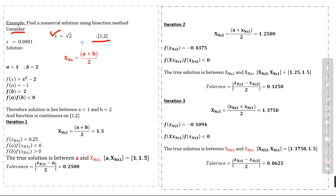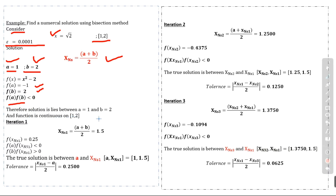Example: find a numerical solution using the bisection method for x = √2, with interval [1, 2] and given tolerance ε = 0.001. This is our bisection formula with a = 1 and b = 2. First, we check the sign of the function at the endpoints: f(a) is negative and f(b) is positive, so f(a) · f(b) < 0. Therefore the solution lies between a = 1 and b = 2, and the function is continuous on this interval.